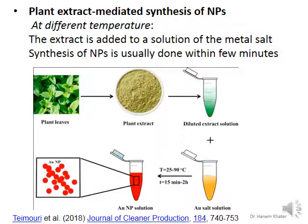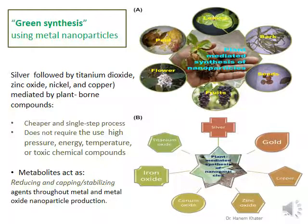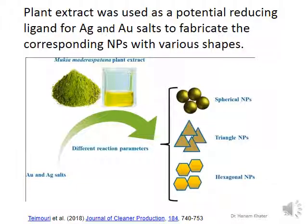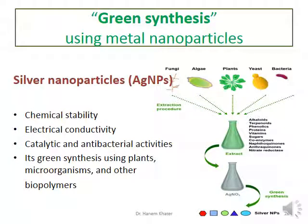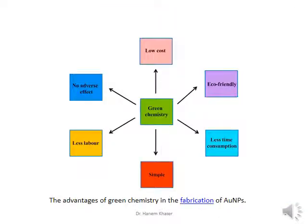Synthesis of nanoparticles based on botanicals is usually done within a few minutes. Green synthesis using metal nanoparticles is a cheaper and single-step process — it does not require the use of high pressure, energy, temperature, or toxic chemicals. Metal nanoparticles could be fabricated through different reaction parameters into spherical, triangular, or hexagonal nanoparticles. Green synthesis using metal nanoparticles is characterized by chemical stability, electrical conductivity, catalytic and antibacterial activities. Such green chemistry is simple, characterized by low cost, less time-consuming, less labor, eco-friendly, and has no adverse effects.